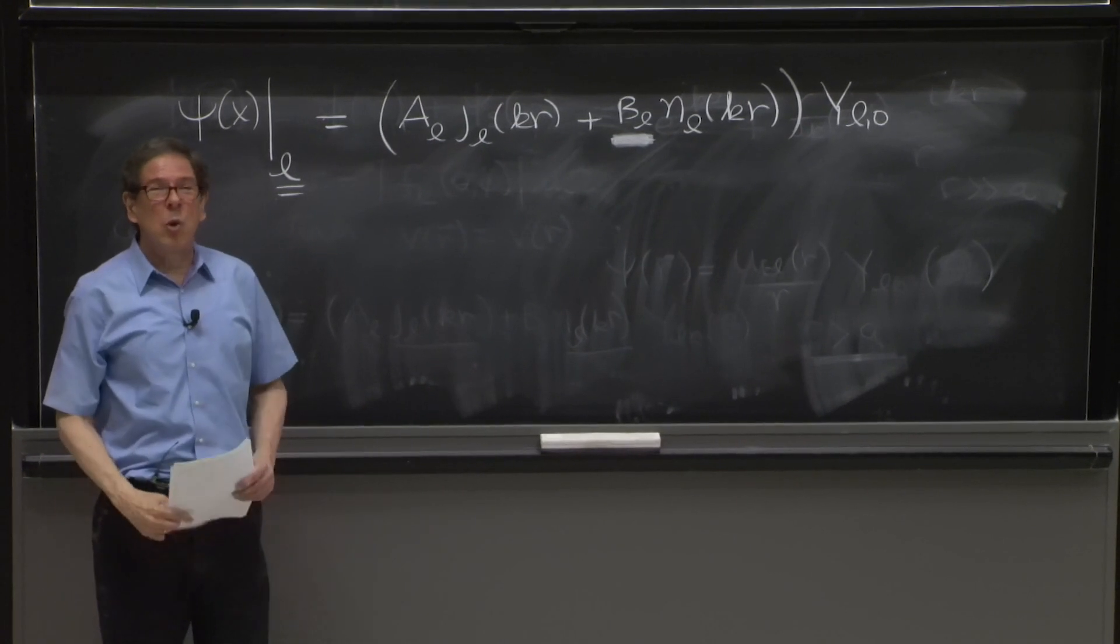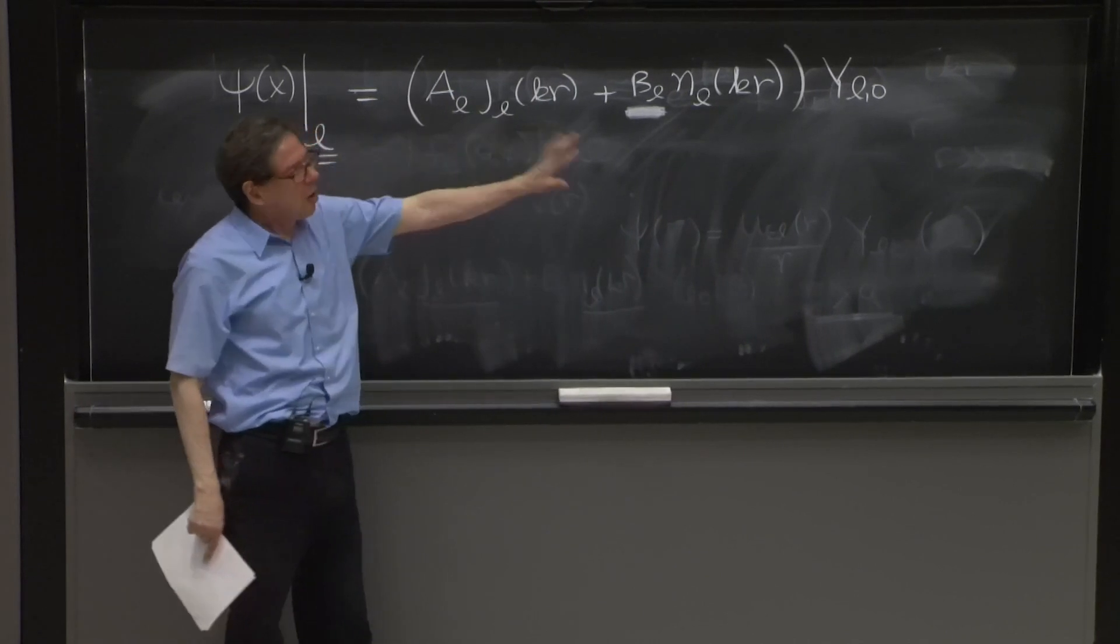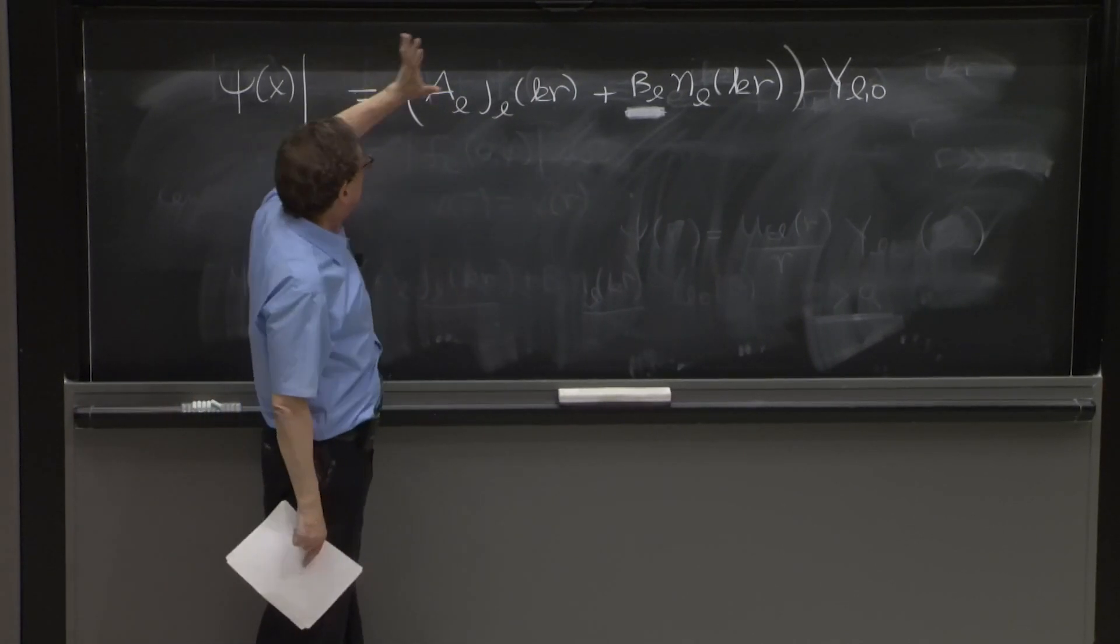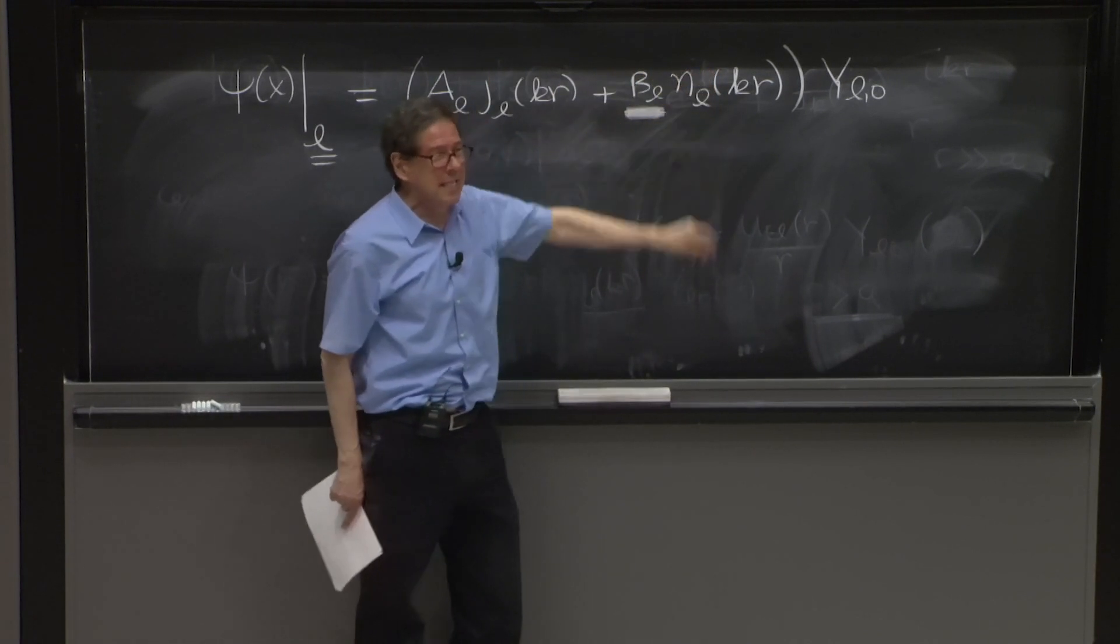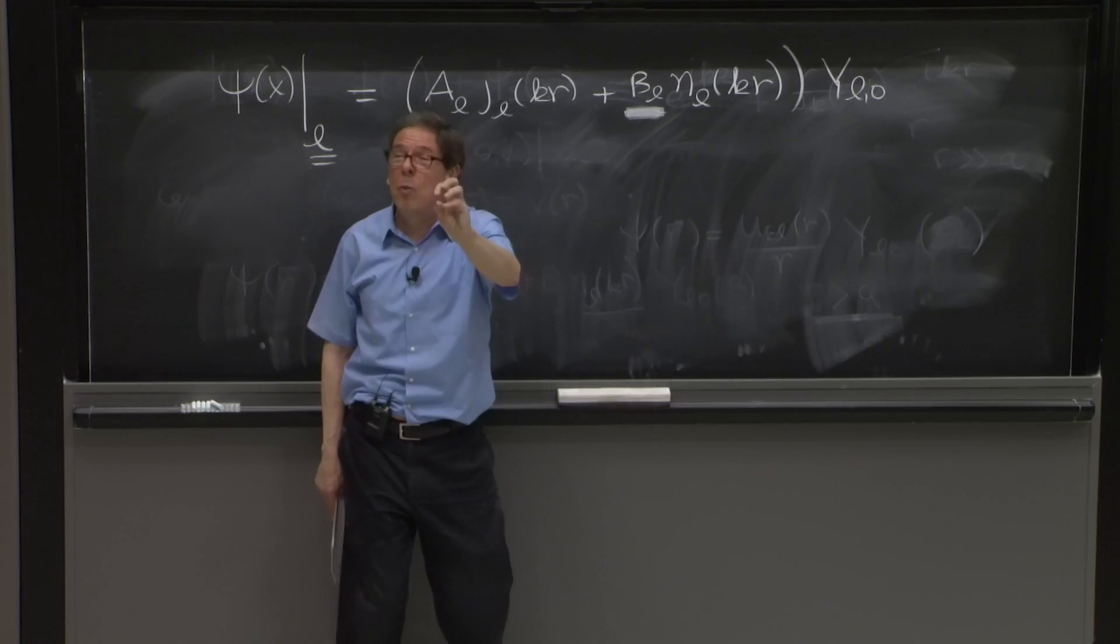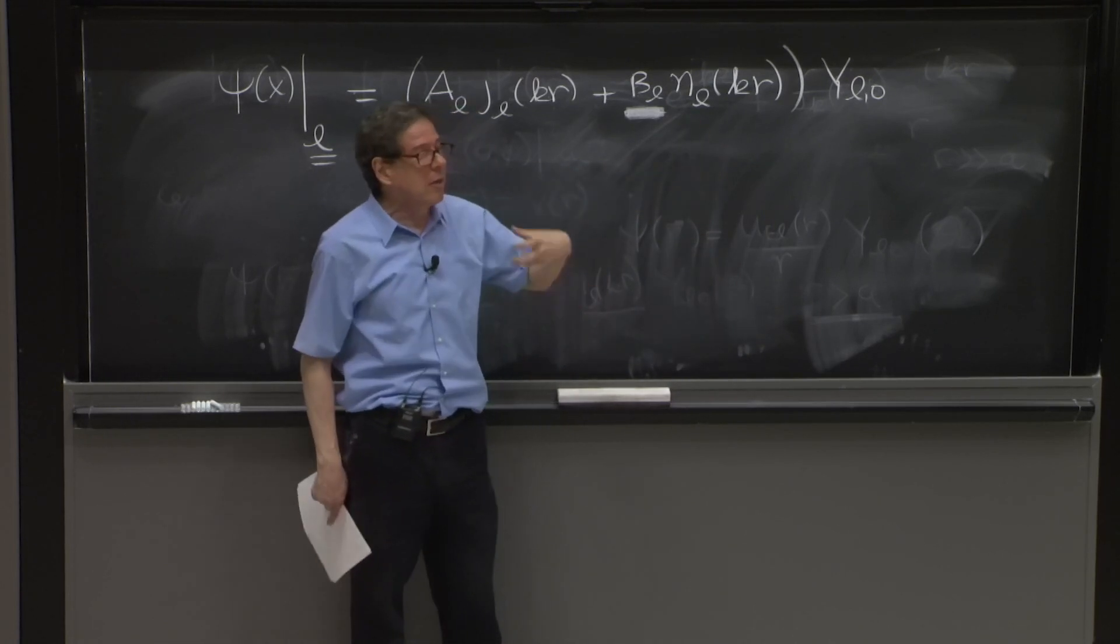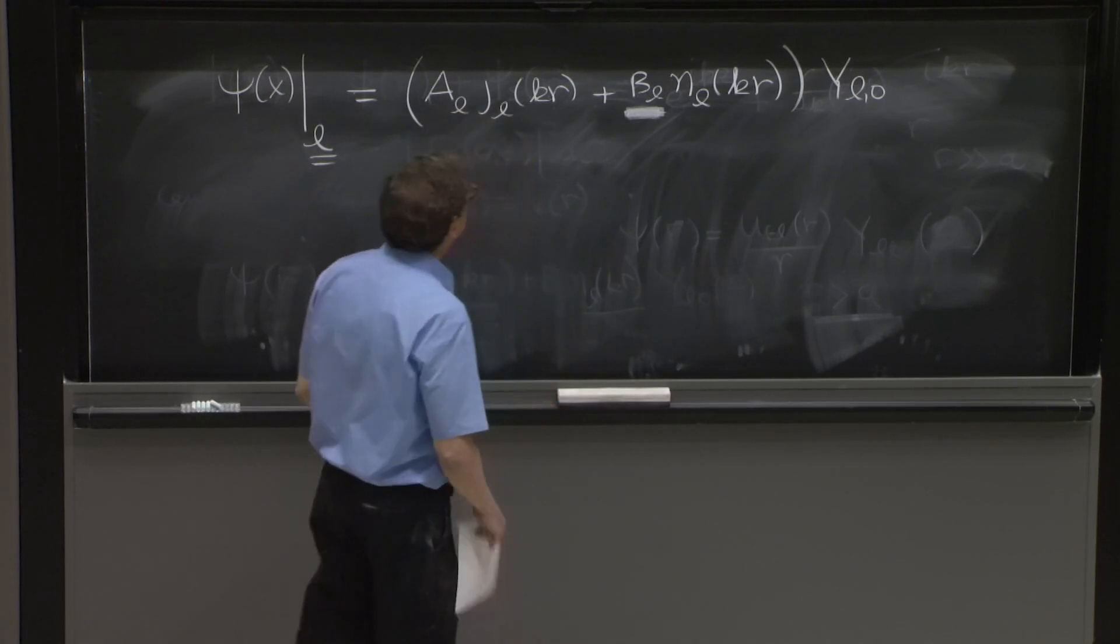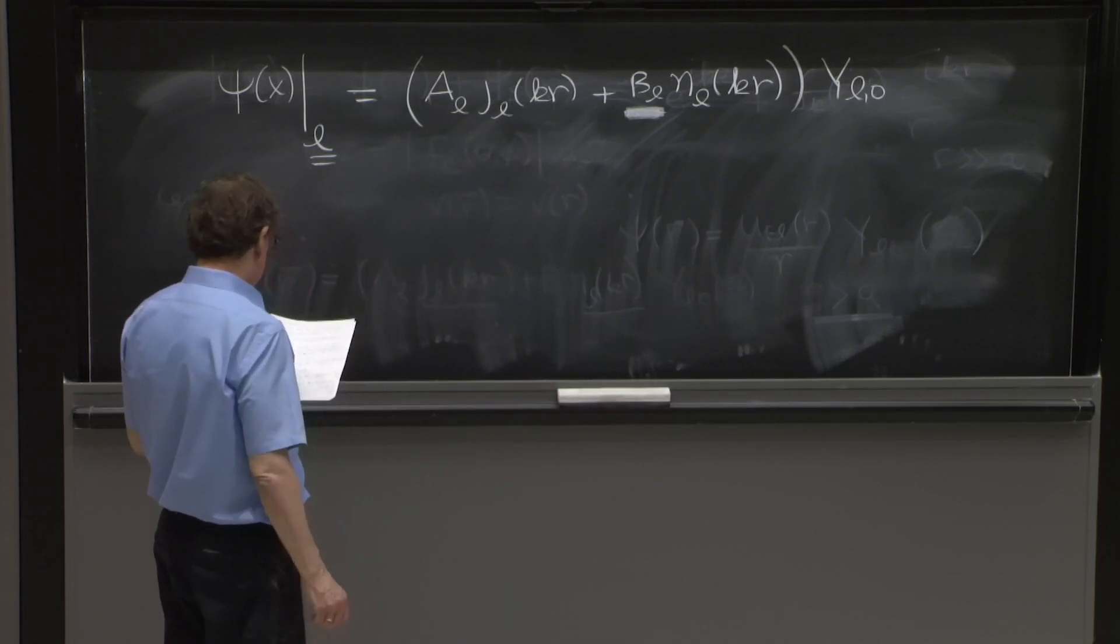Because when there's no potential and no scattering, the solution is valid all the way to r equals 0. And therefore, this has no singularity. But this term is saying that this solution doesn't extend all the way to r equals 0, because this diverges. So something non-trivial is happening. So BL is the signal that there's scattering.